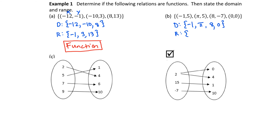The range is the set of all y values or second components. The first ordered pair has y equals 5. Notice the second ordered pair also has y equals 5 — I don't need to repeat that in my list for the range. The next y value is negative 7, and the final y value is 0. So that's the domain and range for this relation.